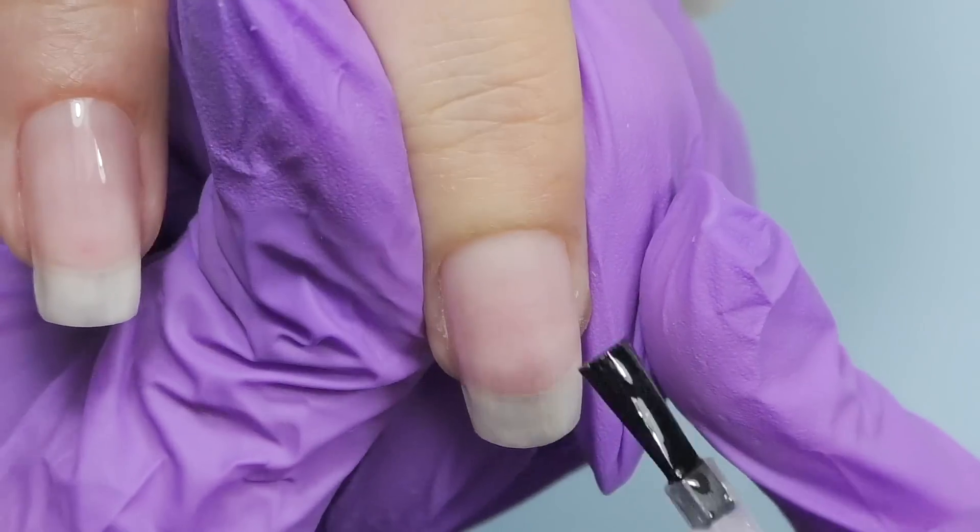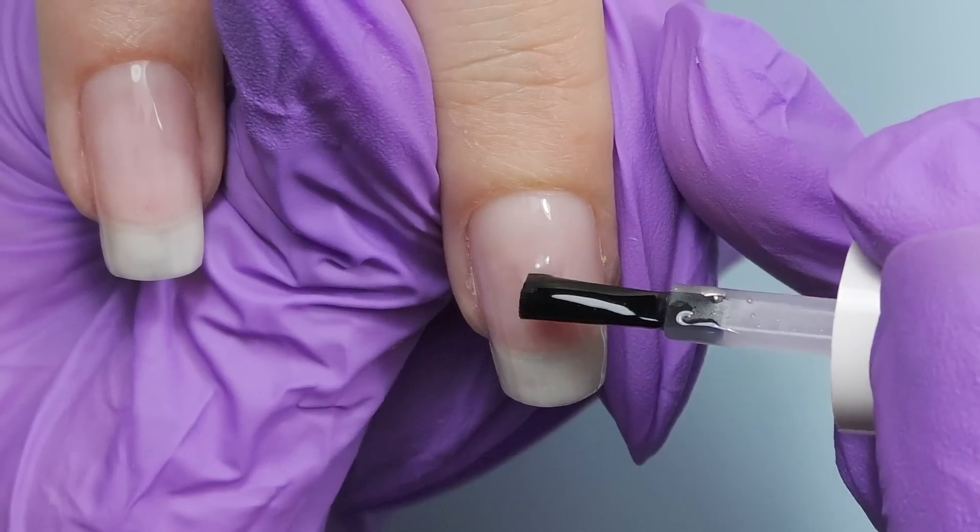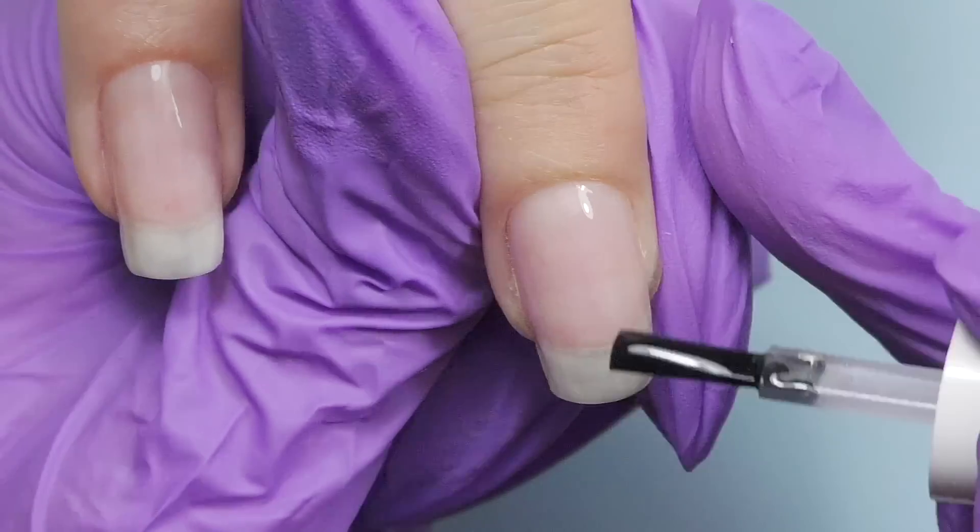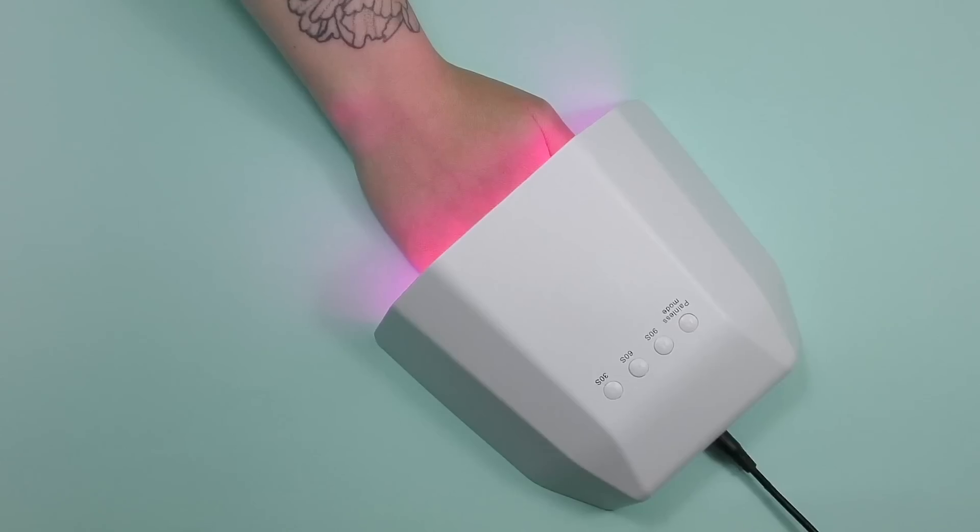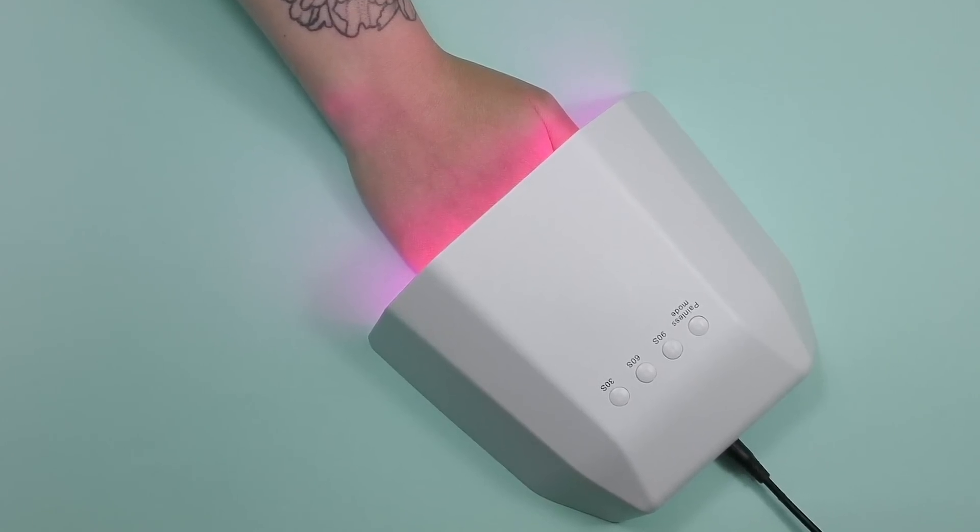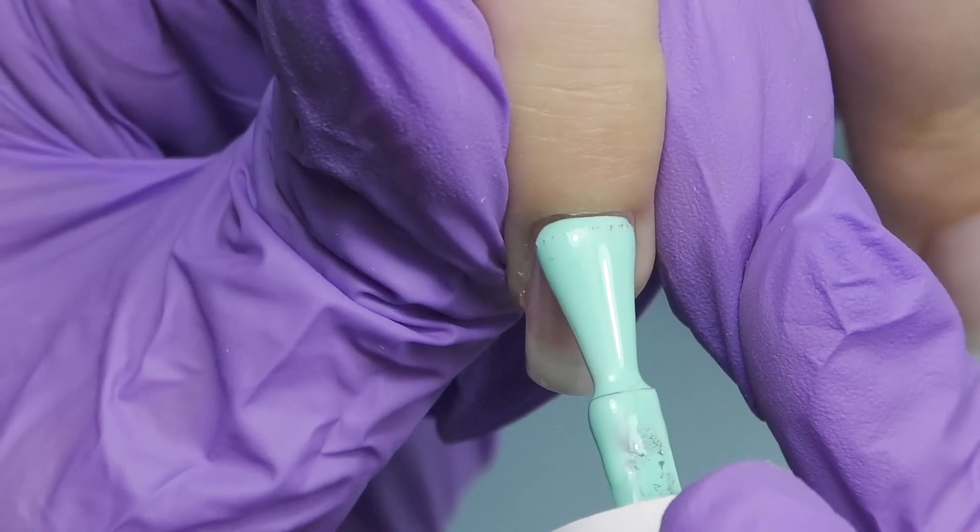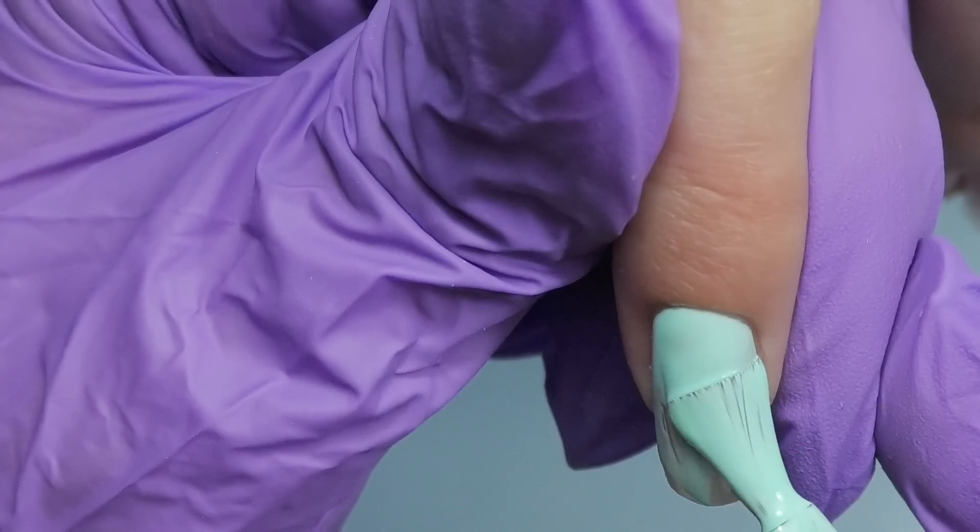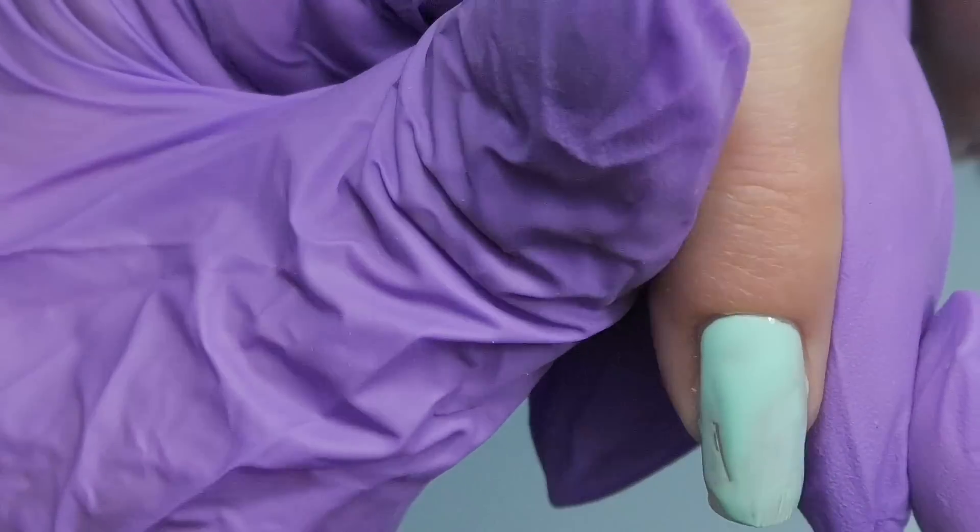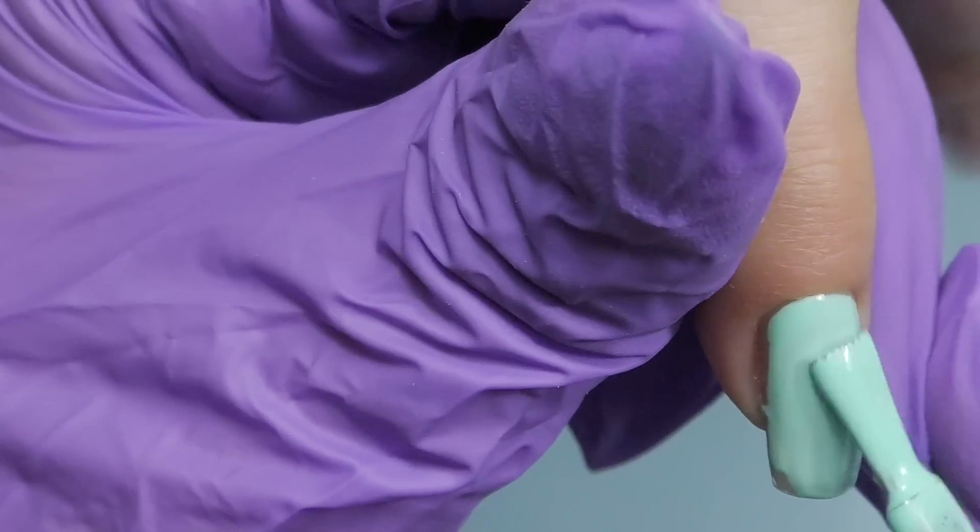Then we need to repeat the same without touching the skin, apply a thin coat, make sure that you do not leave any empty spots along the sidewalls, and then we can add some more to build the structure of the nail. Because my client has such beautiful long nail beds, we just want to make sure that we protect them well enough. Cure the foundation gel for 60 seconds, and then I'm going to apply the colors.